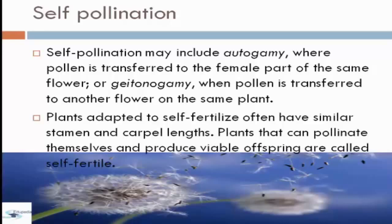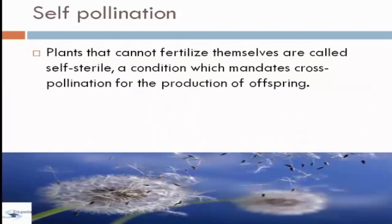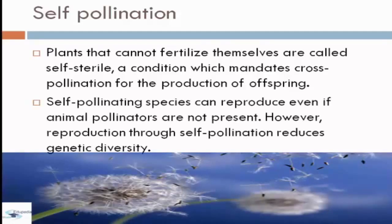Plants adapted to self-fertilize often have similar stamen and carpel lengths. Plants that can pollinate themselves and produce viable offspring are called self-fertile. Plants that cannot fertilize themselves are called self-sterile, a condition which mandates cross-pollination for production of offspring. Self-pollinating species can reproduce even if animal pollinators are not present. However, reproduction through self-pollination reduces genetic diversity.